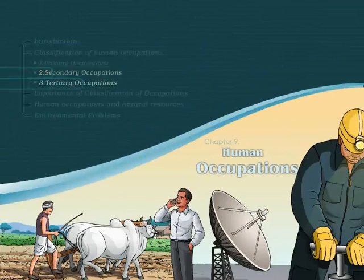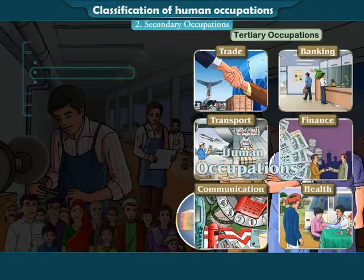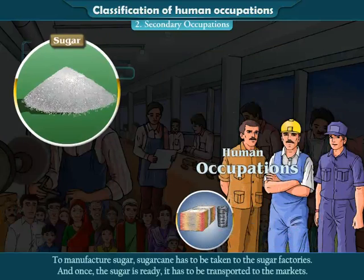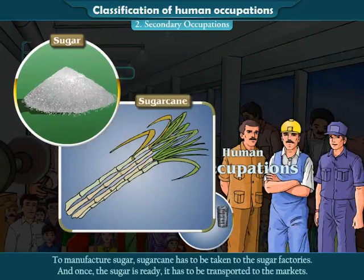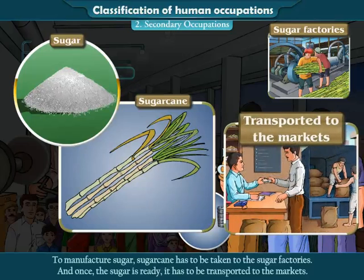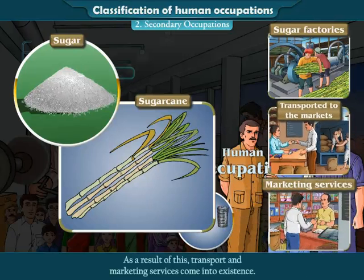Tertiary Occupations. Some occupations are supportive to primary and secondary occupations. To manufacture sugar, sugarcane has to be taken to the sugar factories. And once the sugar is ready, it has to be transported to the markets. As a result of this, transport and marketing services come into existence.